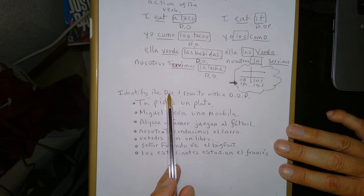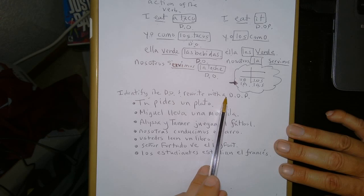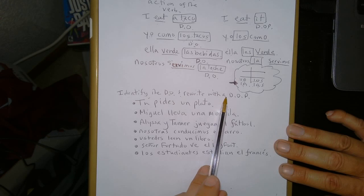So, in these sentences, I want you to identify the direct object. And you circle and underline it. And then rewrite it with the direct object pronoun. Just remember, you put the direct object pronoun where? That's right. In front of the conjugated verb. So, have fun with that.